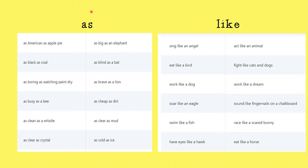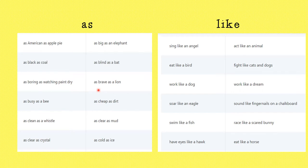Here are some examples of similes using 'as' and 'like.' Remember, a simile compares two things using the word 'as' or 'like.' Let's look at 'as big as an elephant.' That truck was as big as an elephant — they're saying the truck is very big like an elephant is big. How about 'as brave as a lion'? My father is as brave as a lion — you're comparing your father's bravery to a lion's bravery.